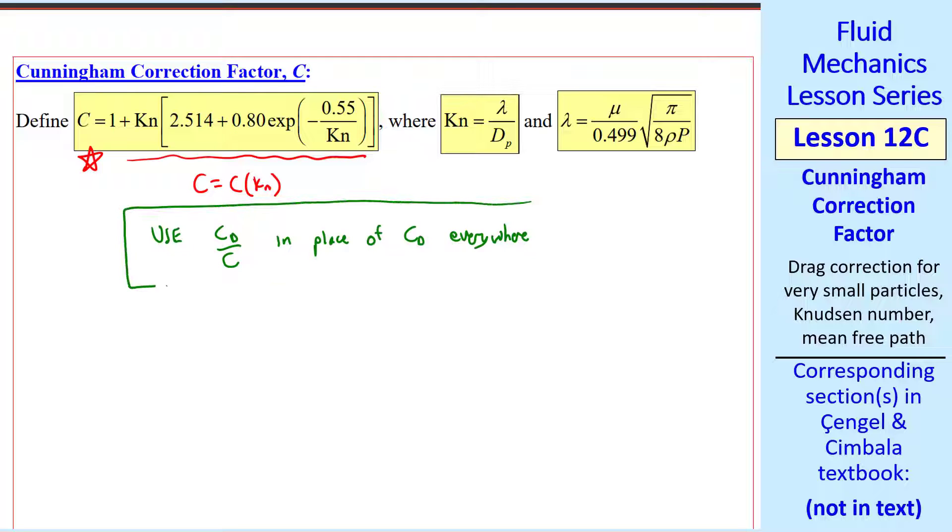And as I said, it's a kind of fudge factor, which goes in the denominator. And we use Cd over C in place of Cd everywhere that we have a Cd.